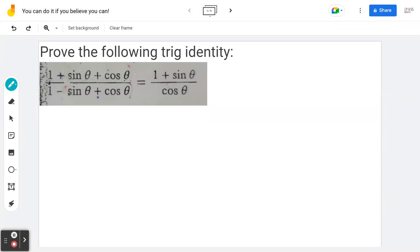Hi everyone. Let's take a look at the following example. Prove the following trig identity. On the left hand side it says 1 plus sin theta plus cos theta all over 1 minus sin theta plus cos theta which equals to 1 plus sin theta all over cos theta.